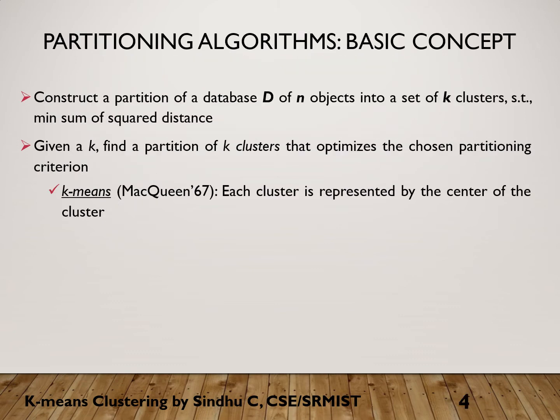The basic concept in partitioning algorithms is: first, we construct a partition from a given database. Say there is a database D with N number of objects in it. We set the number of clusters K to be made from that database, constructing the partition with respect to minimum sum of square distance. Given K as input, we find the partition of K clusters that is optimal, based on some criterion.